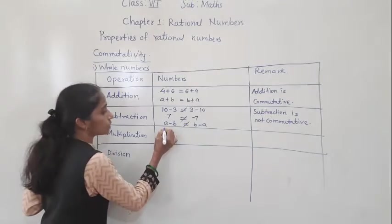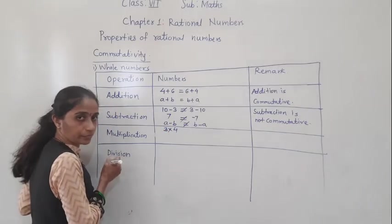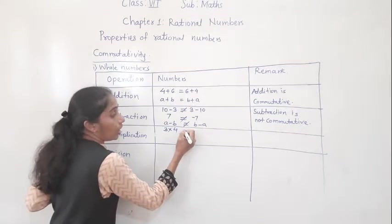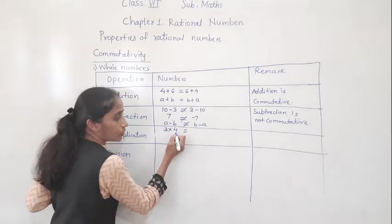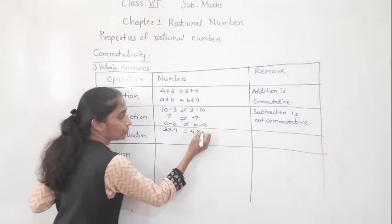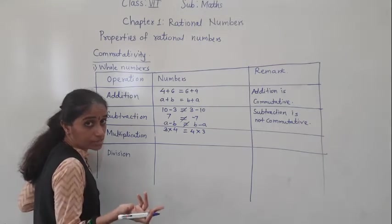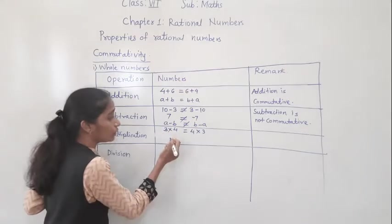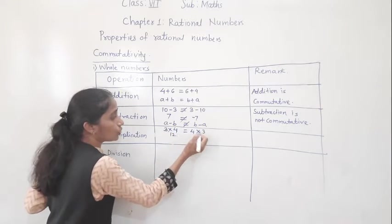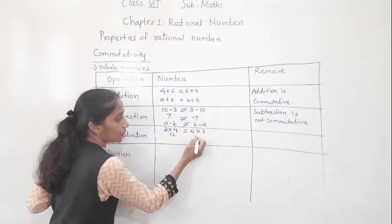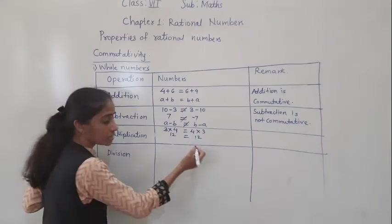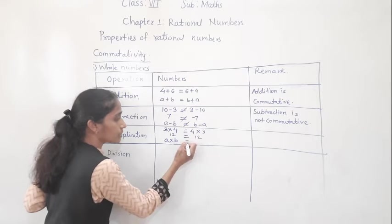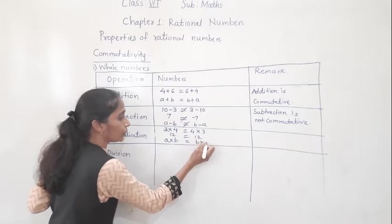Now multiplication. Suppose 3 multiplied by 4 — this is A into B. Now B into A would be 4 into 3. Are we going to get the same answer? 3 fours are 12, and 4 threes are also 12. Both are the same.